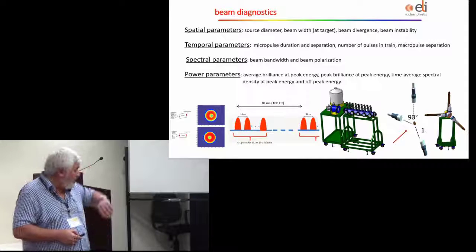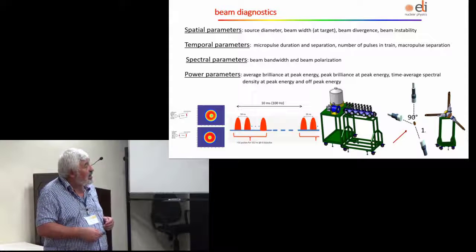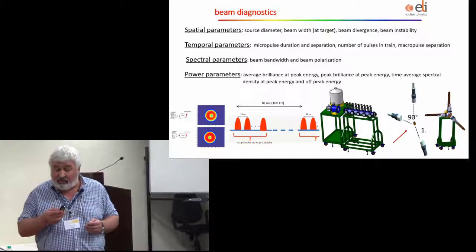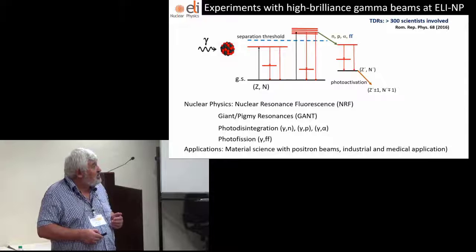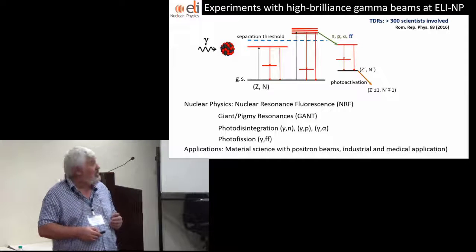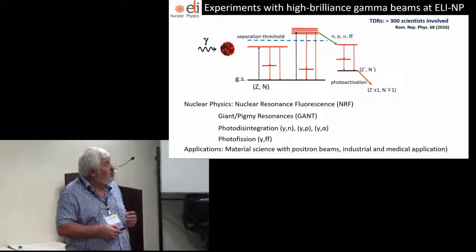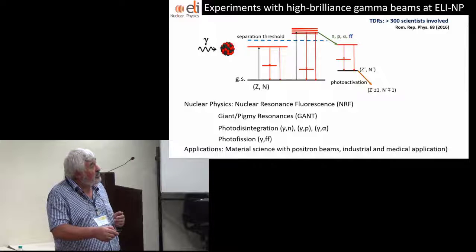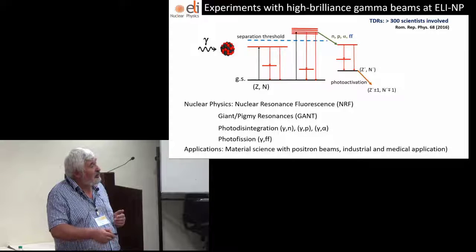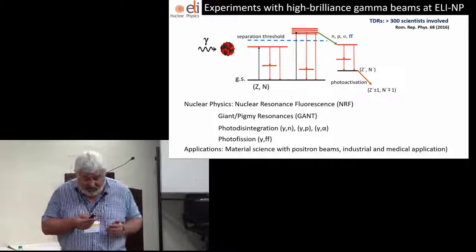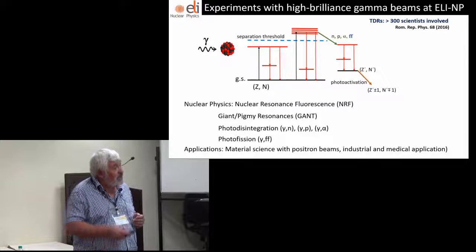First we have to do beam diagnostics. For this we monitor the spatial, temporal, spectral and power parameters of the beam. We've created a family of devices which will be available to users according to their experiments. They'll be able to integrate the system in their data acquisition systems. You have a very well defined probe, the photon. You can tune it to a certain level and study the decay, called nuclear resonance fluorescence, or shoot above the particle separation threshold and measure photo-nuclear disintegrations, giant and pygmy resonances, and photo fission. We've developed a big family of applications like material science with positron beams and different industrial and medical applications.